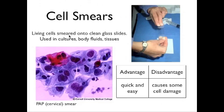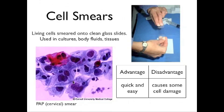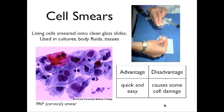There are cell smears, in which case we get living cells and smear them onto a clean glass slide. There are several ways to achieve them. In this picture, we show two slices pressed one against the other, which causes a smear to happen. It's used in cultures, body fluids, and tissues. This is an example of a pap, which is a cervical smear. Its advantage is that it's quick and easy to use. However, the disadvantage is that because we are smearing it onto a slide, it may cause some cell damage.